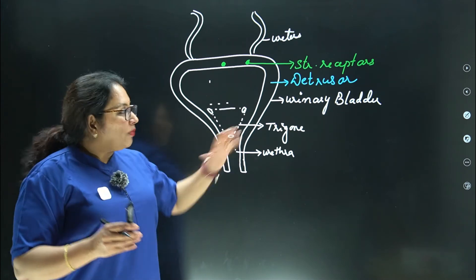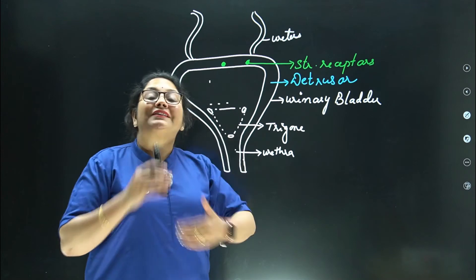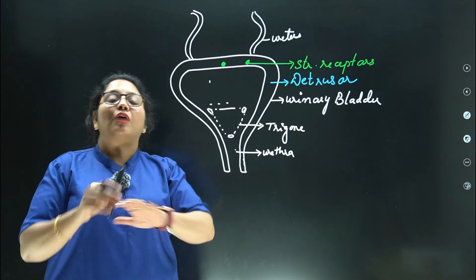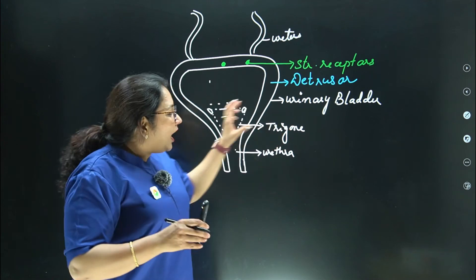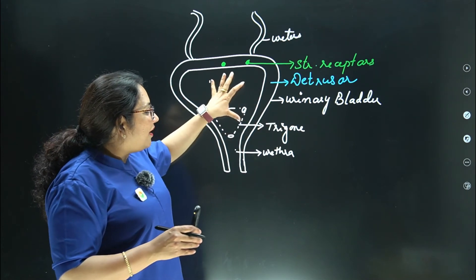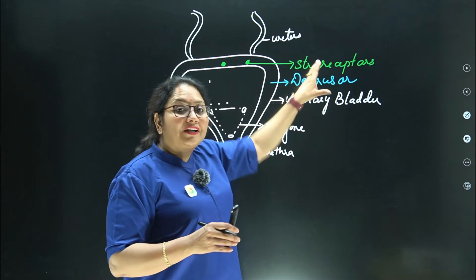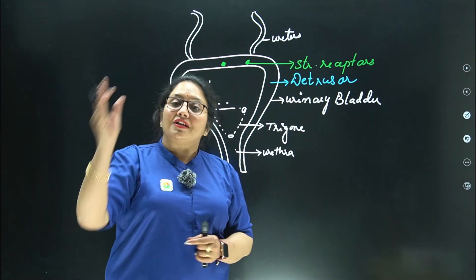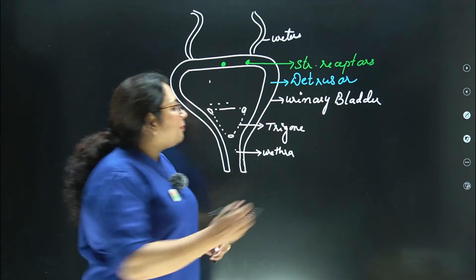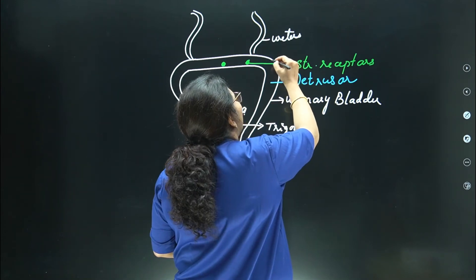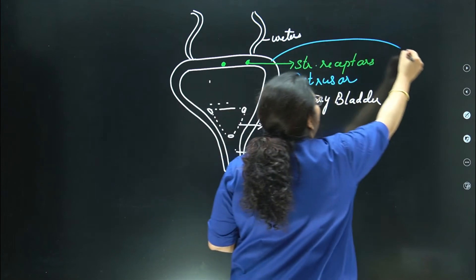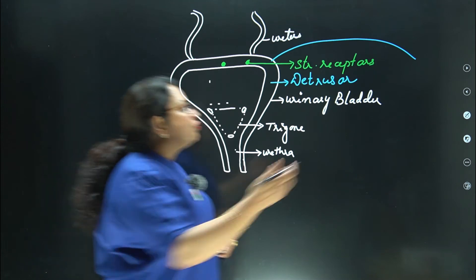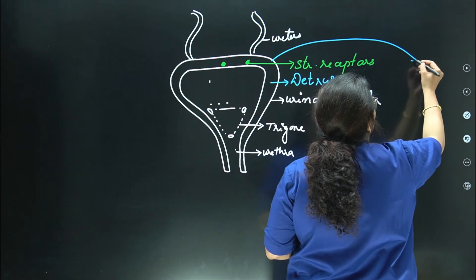Jab bladder bhar raha hota hai, stretch receptors activate hote hain aur central nervous system ke paas information bhejte hain. Information jaati hai spinal cord ke paas. Information le jaane wali jo nerve hoti hai, woh hoti hai sensory nerve. Sensory nerve information lekar jaati hai CNS — central nervous system — ke paas.